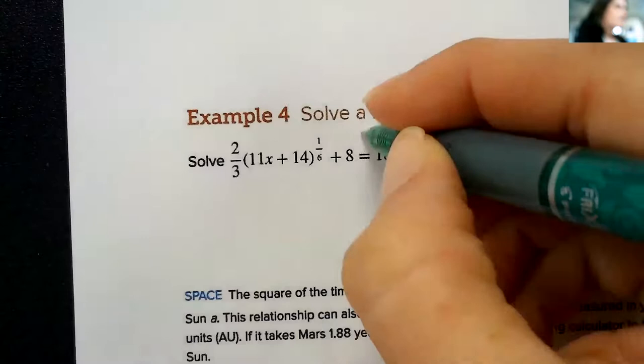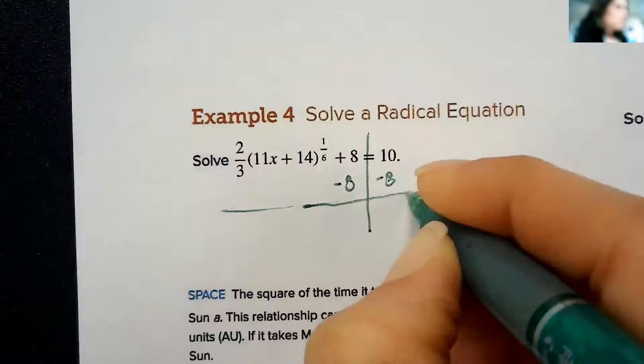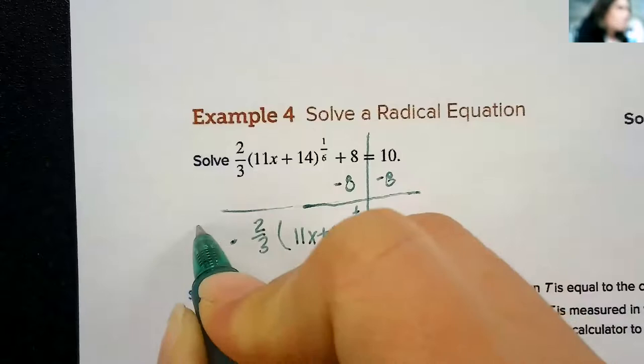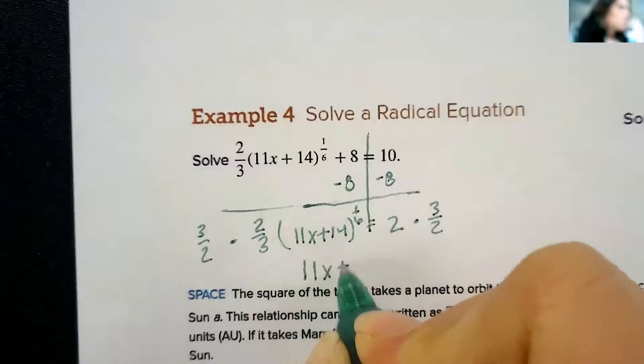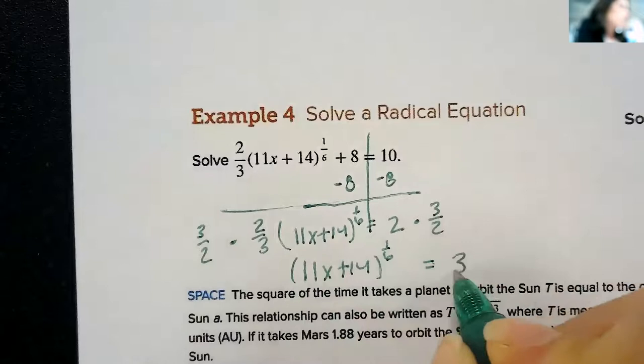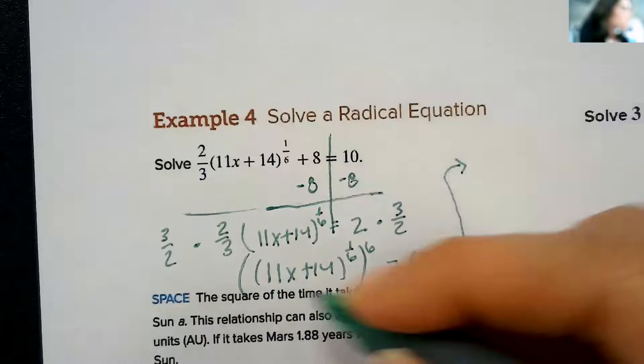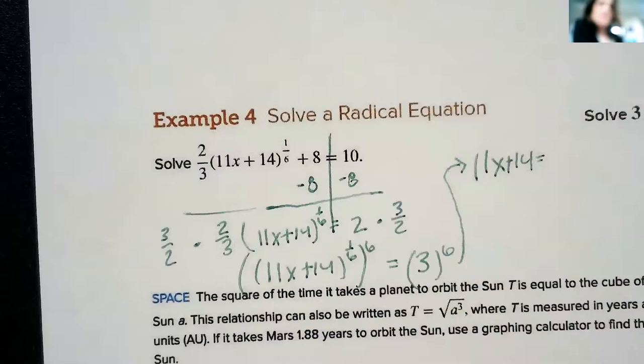Take a look at this. We've got to solve this equation, looks crazy. Let's see if we can handle it. I subtract 8, it gives me two thirds times (11x + 14) to the one sixth equals 2. Multiply by the reciprocal, so three halves on both sides. Give me (11x + 14) to the one sixth equal to 3. Raise each side to the power of 6. I had so much room to work out every problem until these last two. I'm going to take the last room. 11x plus 14, 3 to the sixth. I'm going to use my calculator and I'm going to get 729.